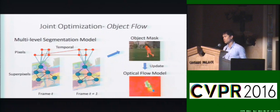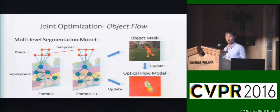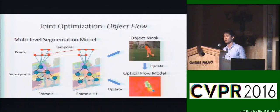We then use this object mask as input to the optical flow model. Furthermore, we can use the updated object flow result to update the segmentation model. We formulate the entire process in a single principled formulation and solve it by iteratively updating the two models.